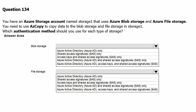Question 134. You have an Azure storage account named storage1 that uses Azure Blob Storage and Azure File Storage. You need to use AzCopy to copy data to blob storage and file storage in storage1. Which authentication method should you use for each type of storage? We need to check for blob storage which one we can use, and for file storage which one we can use. Let's go to the Microsoft documentation portal and check.